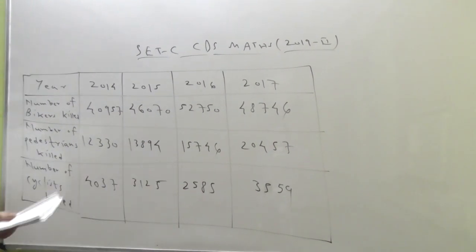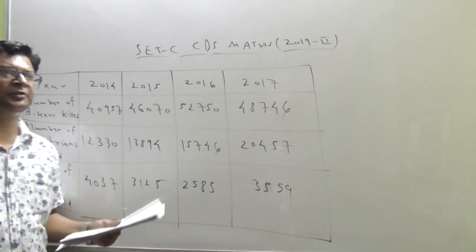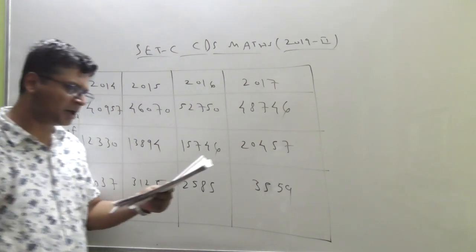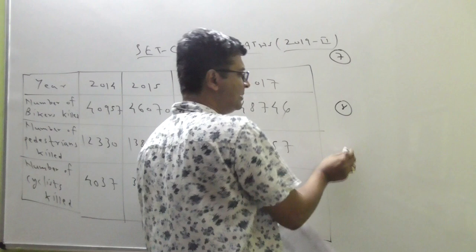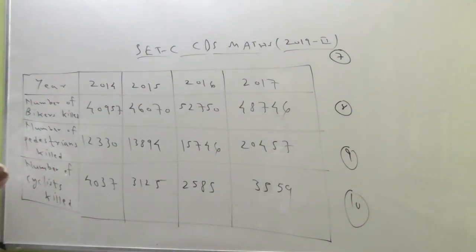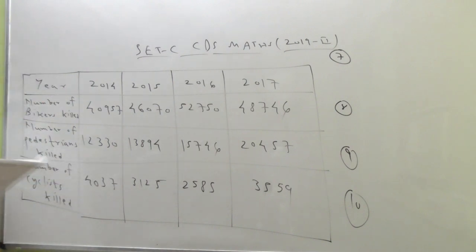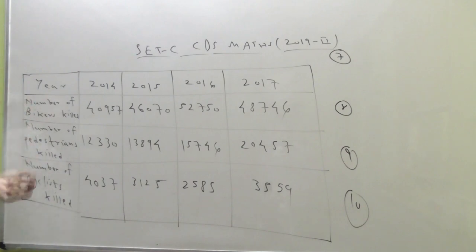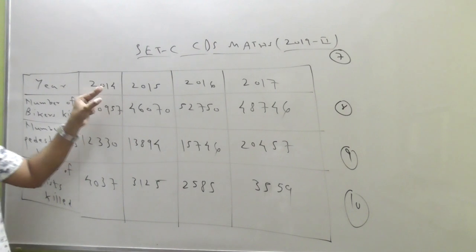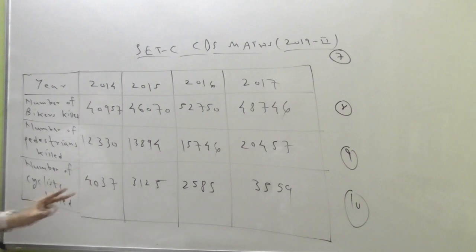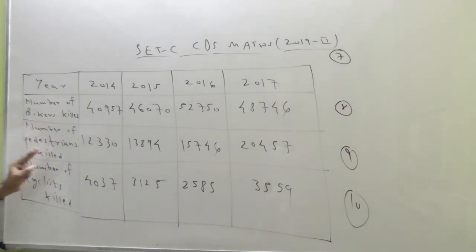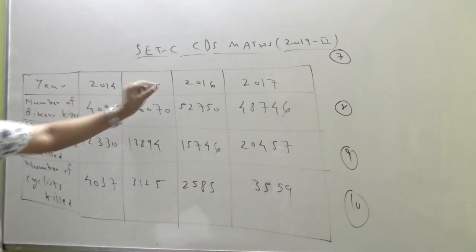The next question covers 4 sub-questions. There are some questions in this paper dealing with data interpretation, and this is one of them — covering questions 7, 8, 9, and 10. The question is not tough but needs a bit of calculation. The data shows that Indian roads are turning deadlier over the years, with the number of bikers, pedestrians, and cyclists killed in road accidents in years 2014, 2015, 2016, and 2017 given in the table.